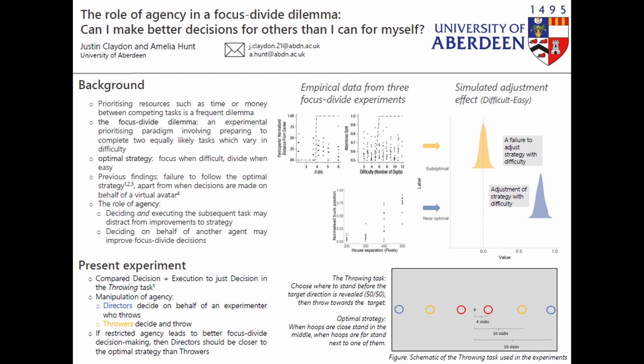In the throwing task, participants choose where to stand between two potential target hoops, which vary in their separation. After they choose a place to stand, the target is revealed, and it's a 50-50, and they make the throw towards that target.